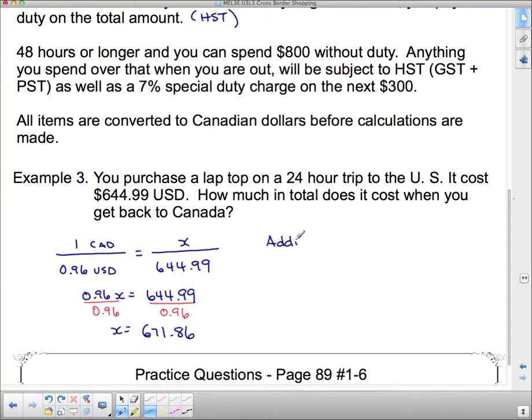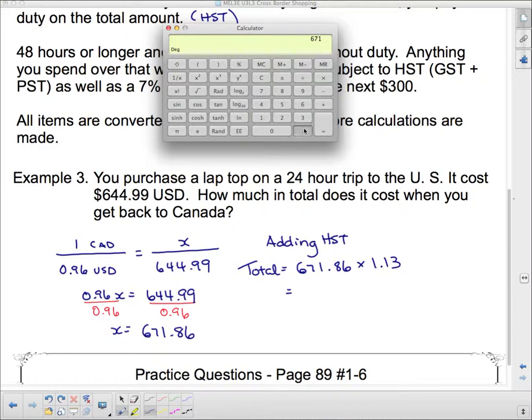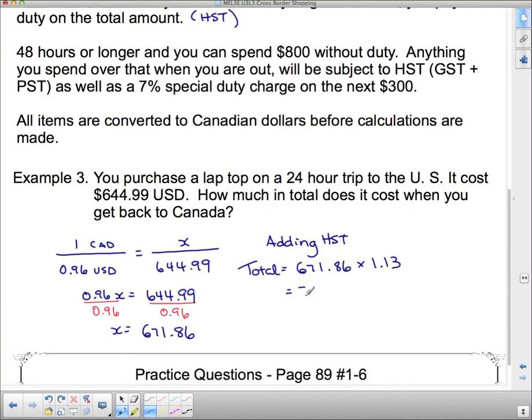we do $671.86. This is our total. I'm going to do it all in one swoop. $671.86 times 1.13. Now, $671.86 times 1.13 is $759.20. So, you can't escape sales tax even when you go across the border. And if you try to sneak it back across the border, you could be in big, big trouble. So, it's best to declare your stuff and pay your duty when you come across the border.